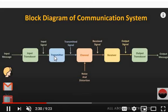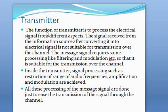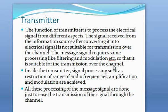This electrical signal is then given to the transmitter. The transmitter contains several sub-blocks. The function of a transmitter is to process the electrical signal from different aspects. The signal from the information source is not suitable for transmission over the channel and requires processing like filtering, modulation, etc. Inside the transmitter, signal processing such as restriction of audio frequencies, amplification, and modulation are achieved to ease transmission through the channel.